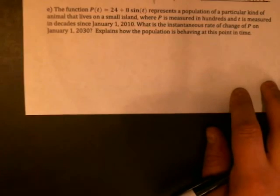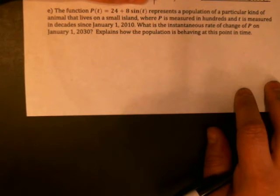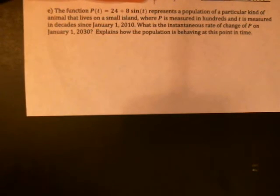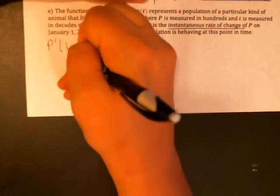Okay, last one, a word problem. We have function p(t) equals 24 plus 8 sine t. And this gives us the population of a particular kind of animal living on a small island. p is measured in hundreds. t is measured in decades since January 1st, 2010. We want to find the instantaneous rate of change of p on January 1st, 2030. Explain how the population is behaving. Okay, so if we want to find the instantaneous rate of change, that should immediately say take the derivative, p prime of t.